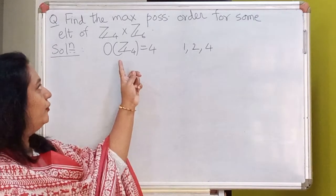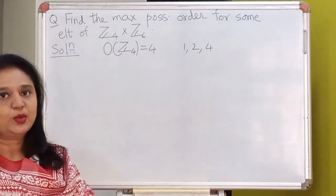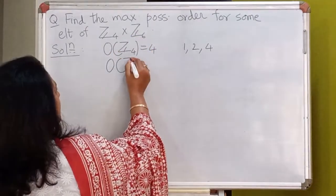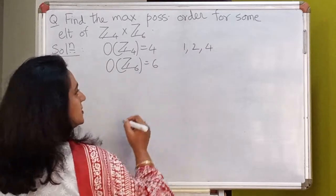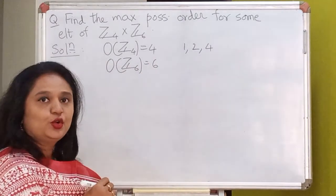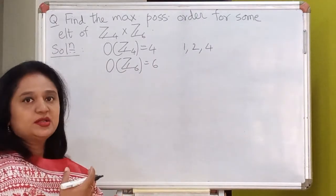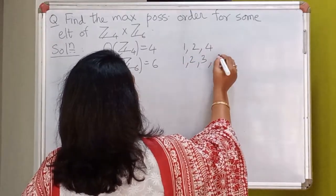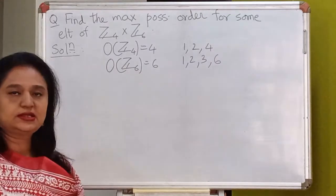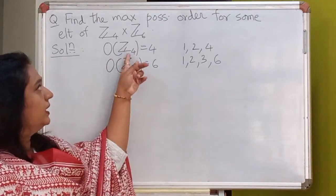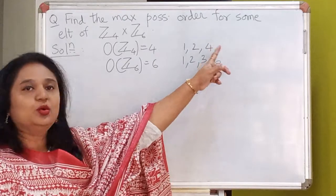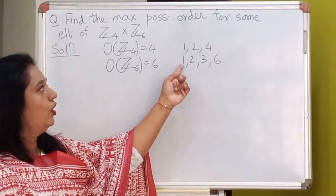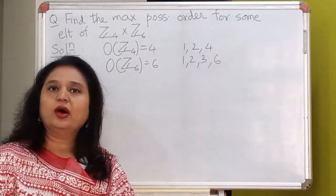Similarly, if you look at the group Z6, the order of Z6 is 6. So in this group we can have elements of possible orders 1, 2, 3, and 6. So an element in the first group can have order 1, 2, or 4, and an element in the second group can have order 1, 2, 3, or 6.